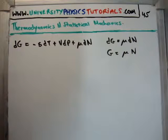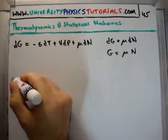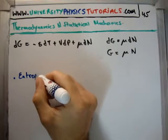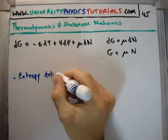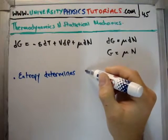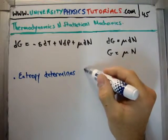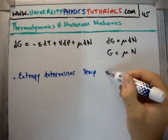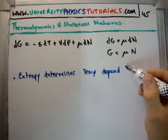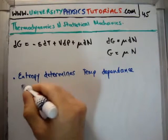If we look at this particular thermodynamic identity, we see that entropy determines the temperature dependence of G.